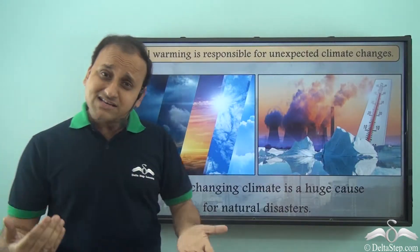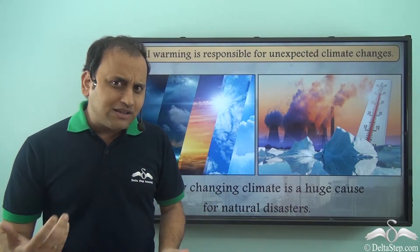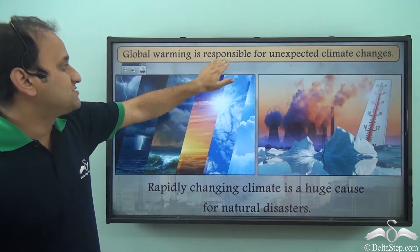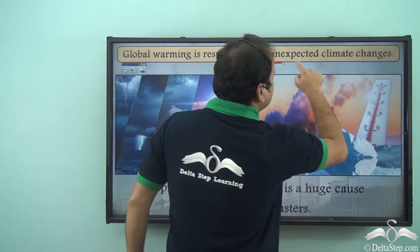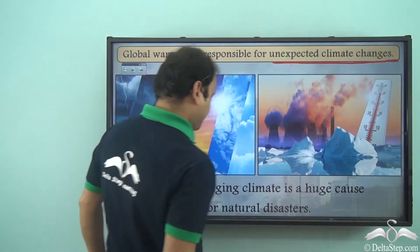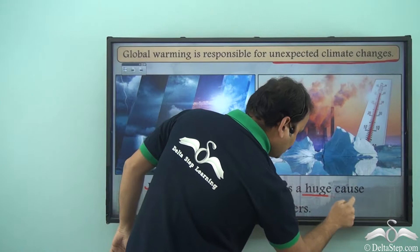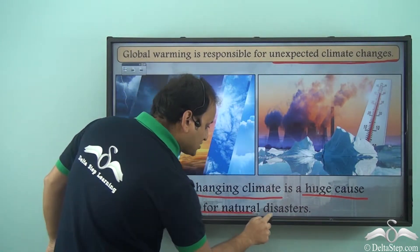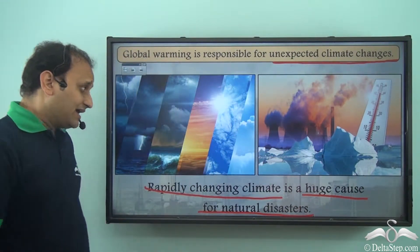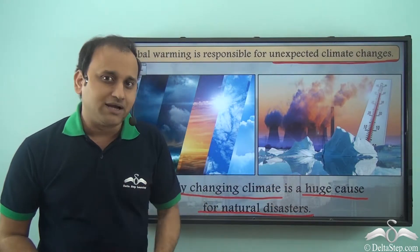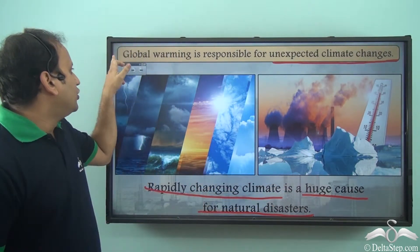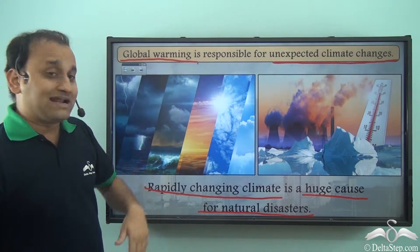What is the main reason for all these climate changes? Global warming is responsible for unexpected climate changes. Rapidly changing climate is a huge cause for natural disasters, and climate is changing rapidly because of global warming, resulting in more and more natural disasters.